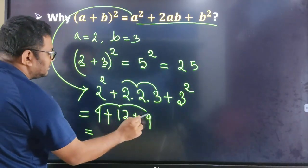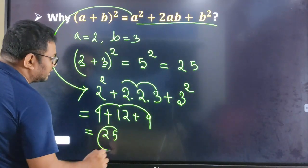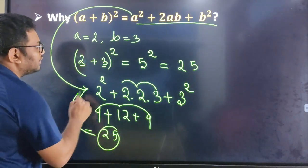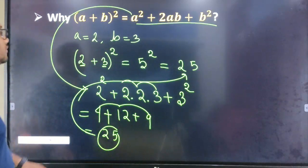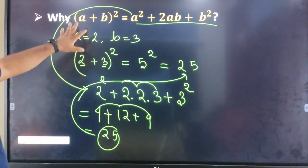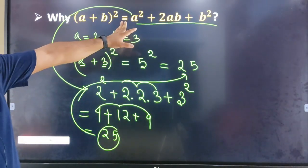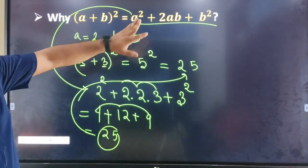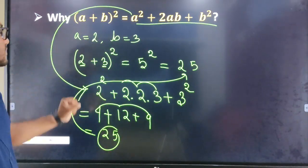16 plus 9 means 25. Basically, if we say a plus b whole square is equal to a square plus 2ab plus b square, that is equal to a square plus 2ab plus b square. This is simple.